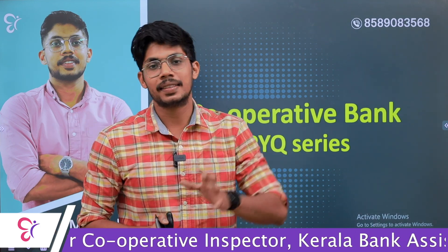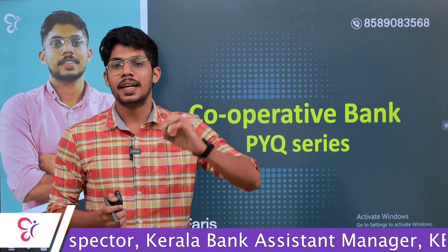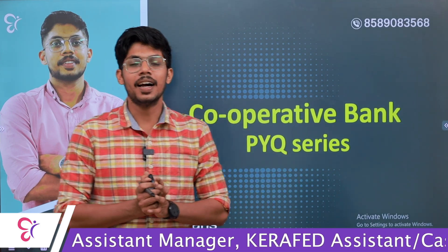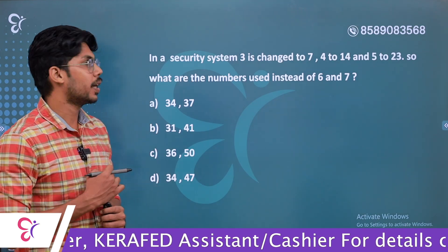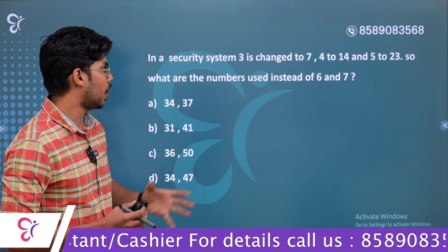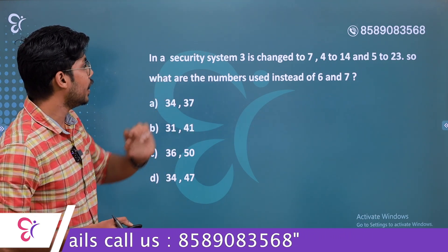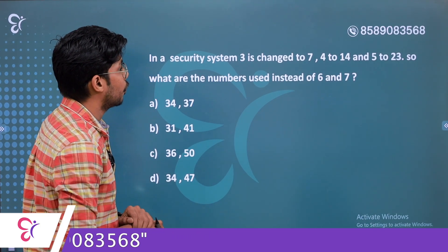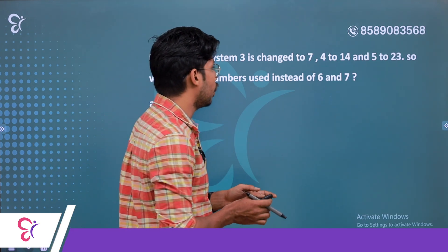We will discuss the next question from the CSEB exam. In a security system, 3 is changed to 7, 4 to 14, and 5 to 23. So what are the numbers used instead of 6 and 7?